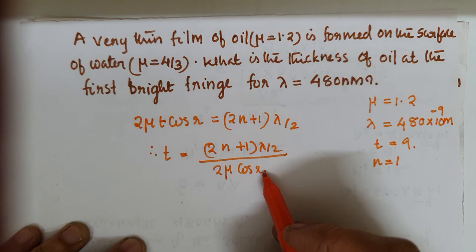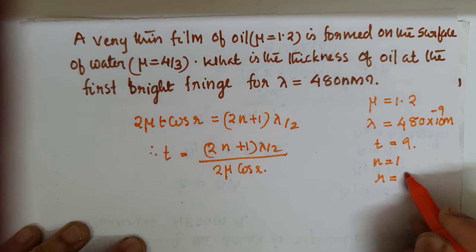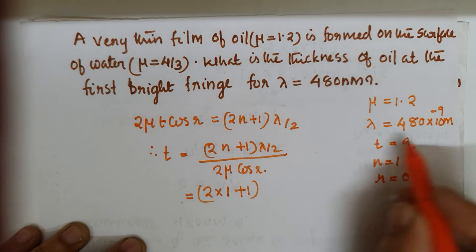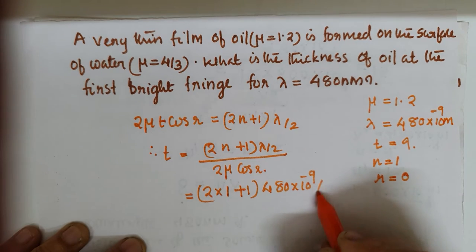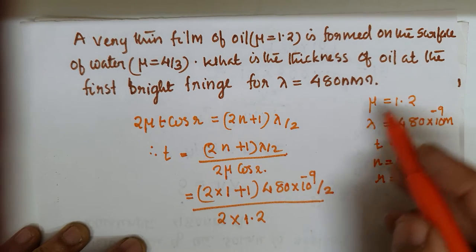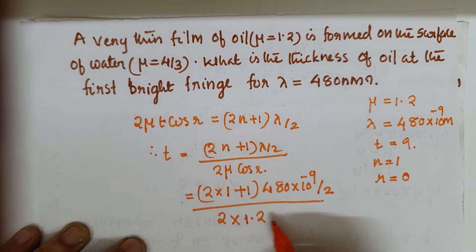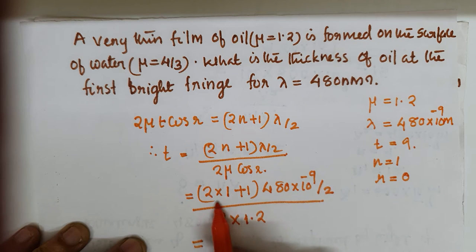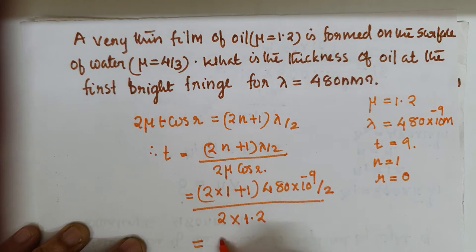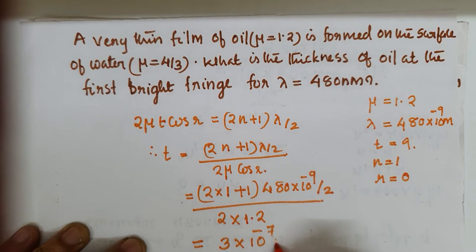For normal incidence, r is equal to 0. So this equation becomes: t equal to (2×1 + 1) into 480×10⁻⁹ divided by 2, whole divided by 2 into 1.2 (the oil refractive index). This gives 3 into 480×10⁻⁹ divided by (2 into 2 into 1.2), which is about 3×10⁻⁷ meter. So the thickness of the film is 3×10⁻⁷ meter.